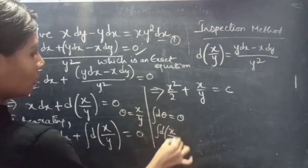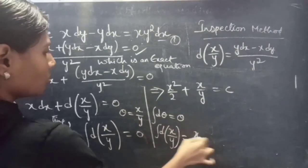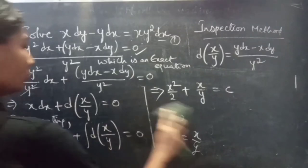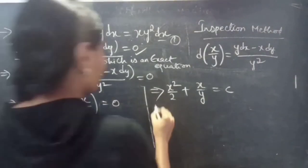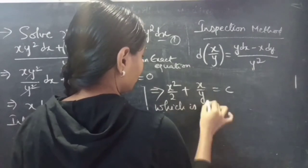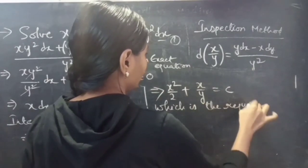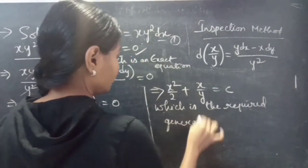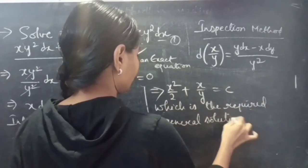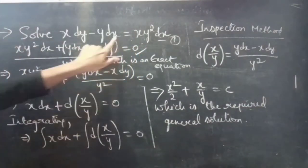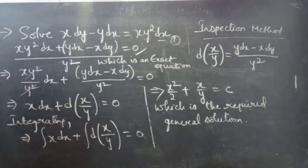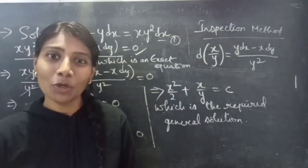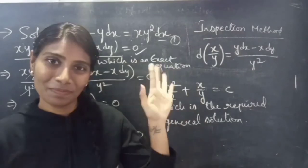The integral of d(x/y) is x/y, giving us the required general solution to the given equation: x squared / 2 plus x/y equals c. In this video we have solved a problem involving a non-exact equation using the inspection method. Hope you understand. We will see you in the next video. Bye-bye.